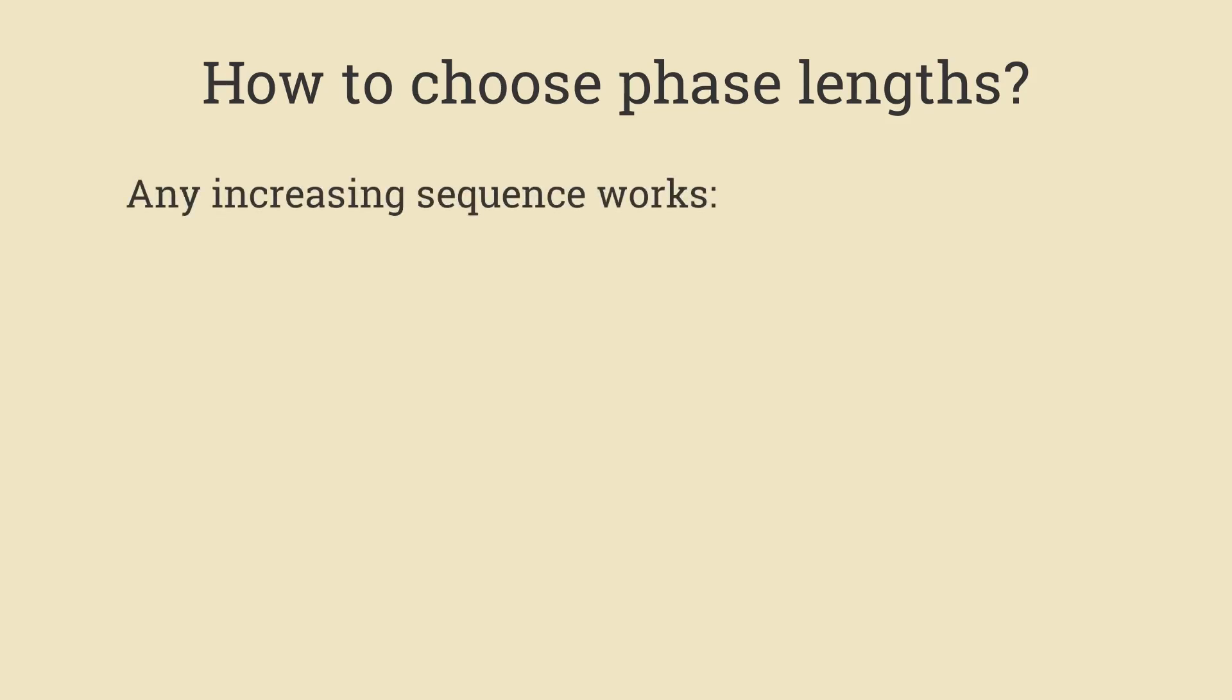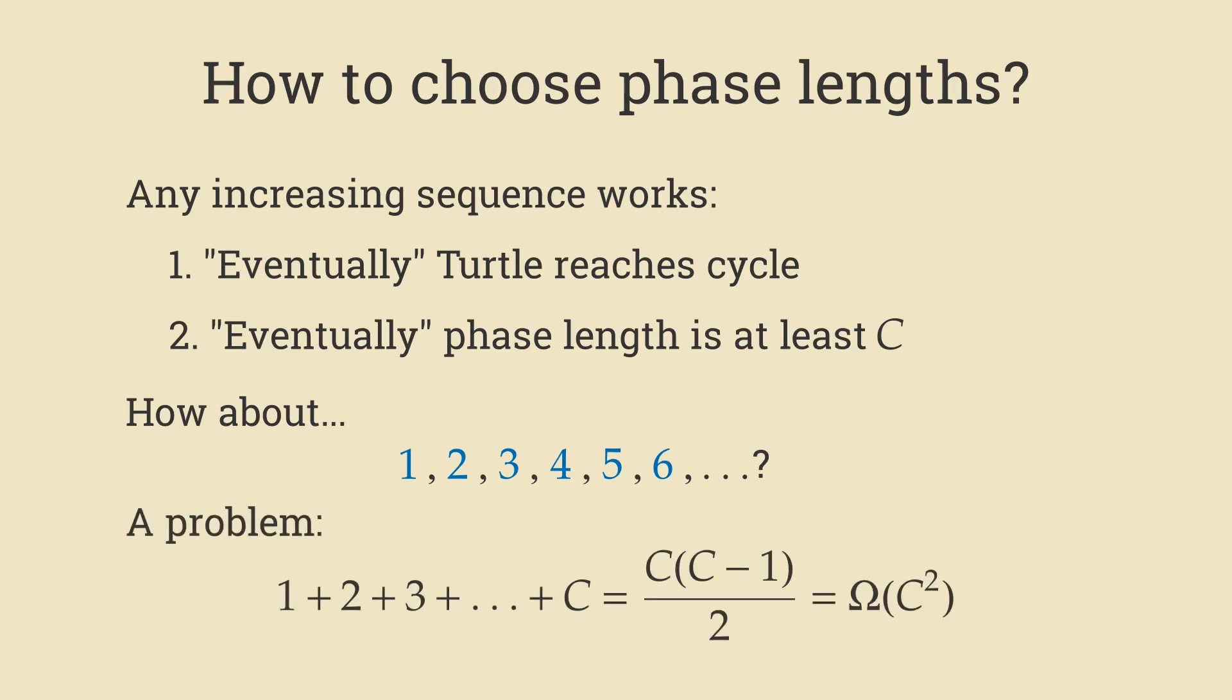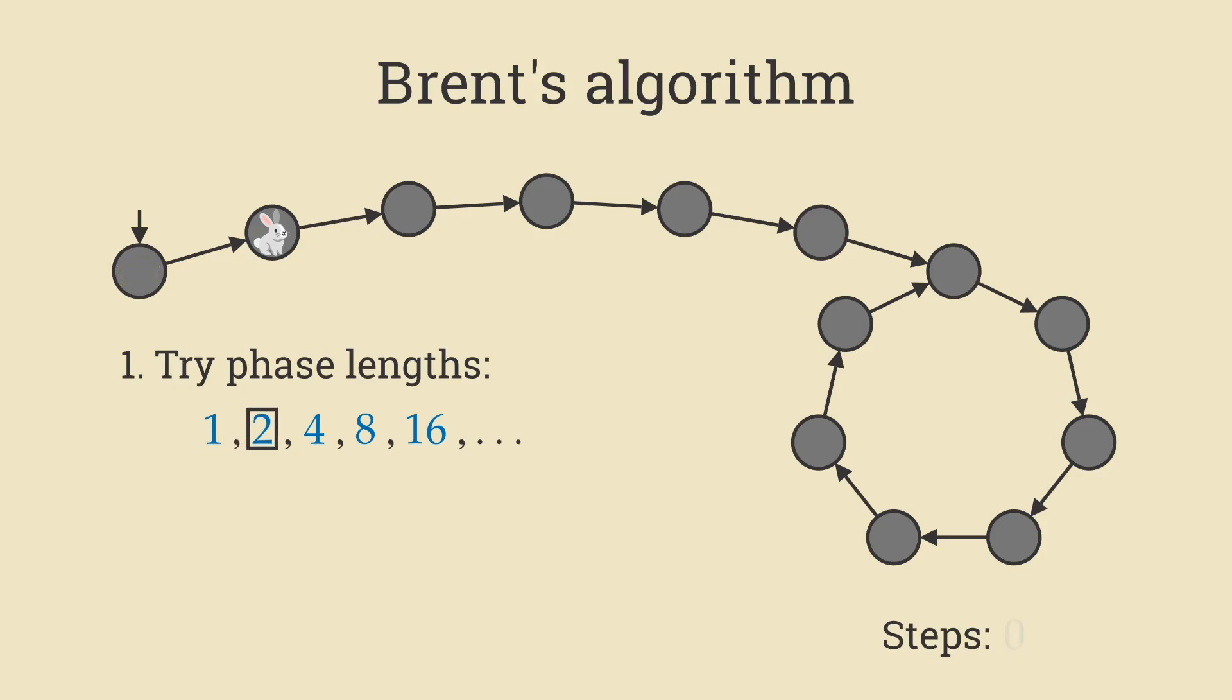So how do we go about choosing these phase lengths? Well, as it turns out, any increasing sequence works. Because once again, eventually the turtle reaches the cycle. And since the numbers are always going up, the phase length eventually gets to be at least C. So why not just a simple sequence like 1, 2, 3, 4, so on and so forth? There's a bit of an issue. If you try to add up all the phase lengths, you get this expression right here, which is already some kind of quadratic polynomial in C. This is just too slow. Instead, we need to be more aggressive in how quickly the phase lengths grow. So Brent chooses powers of 2. You can think of this as an inverted binary search, and we'll talk about why this is better.